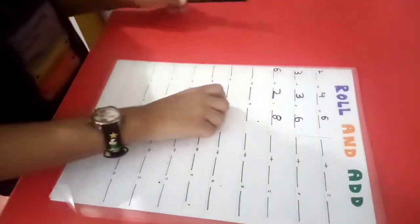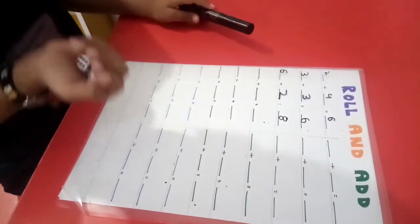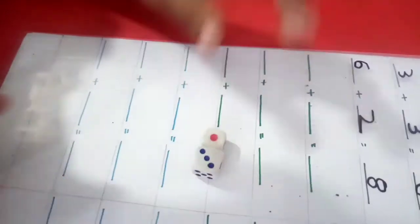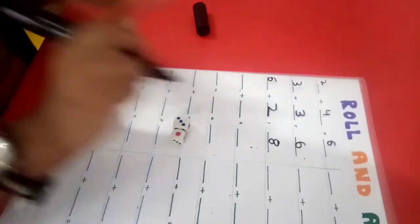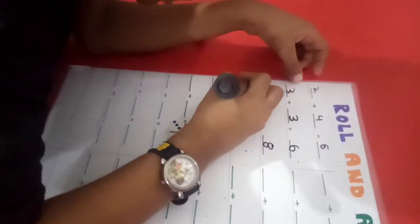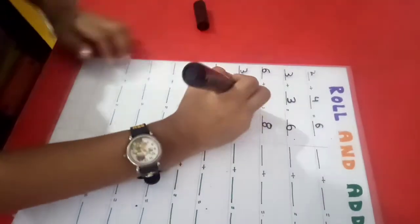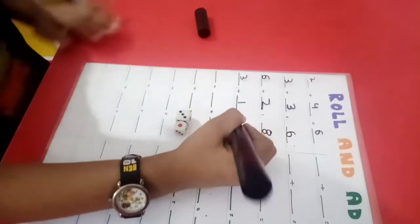What comes? 3 and 1. Write down. And what is the answer? 4. Yes.